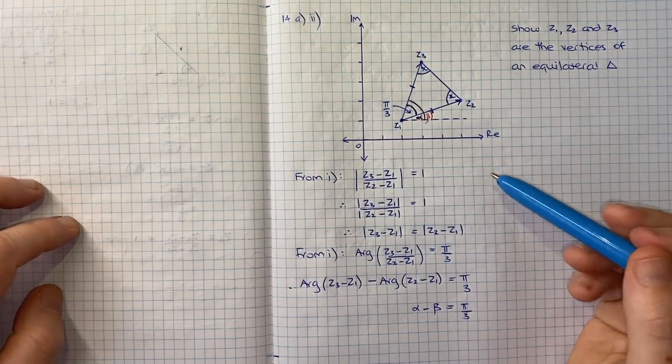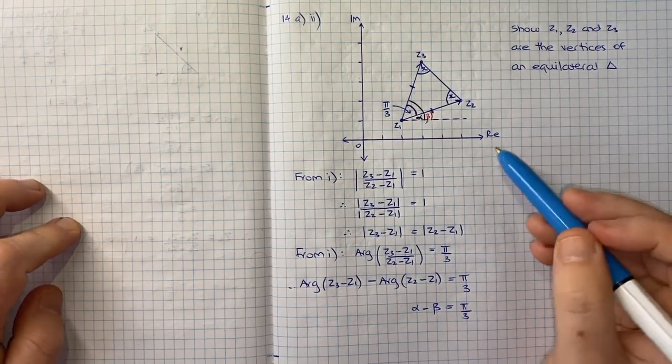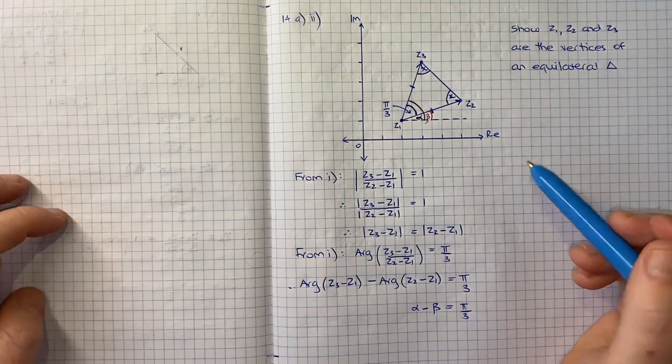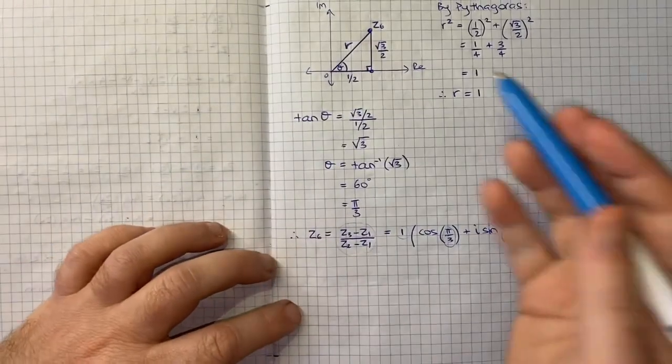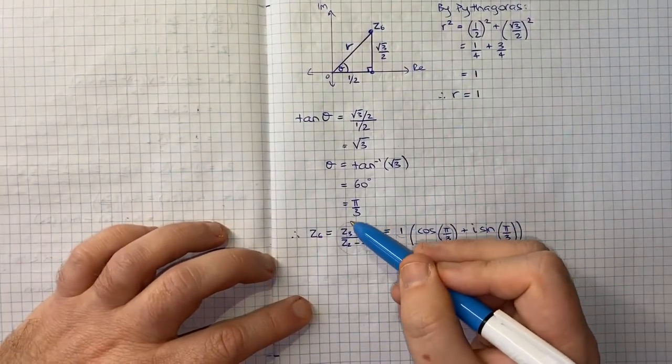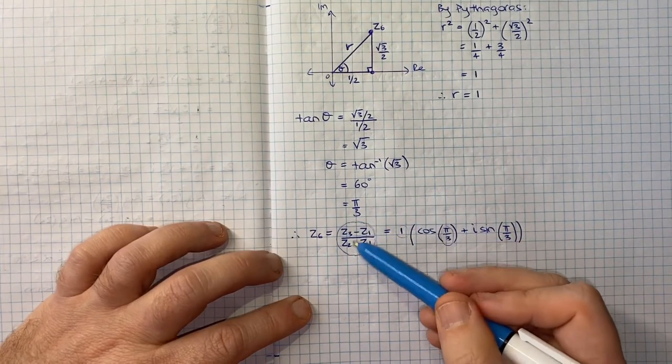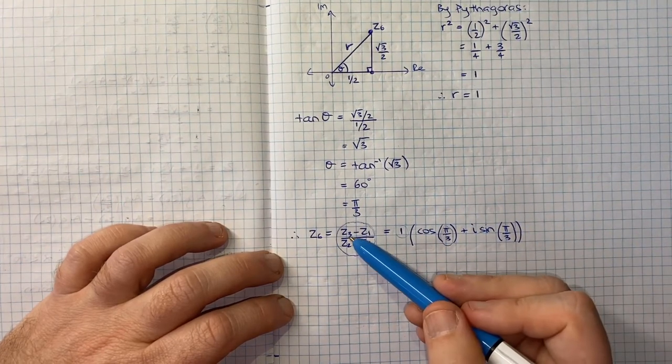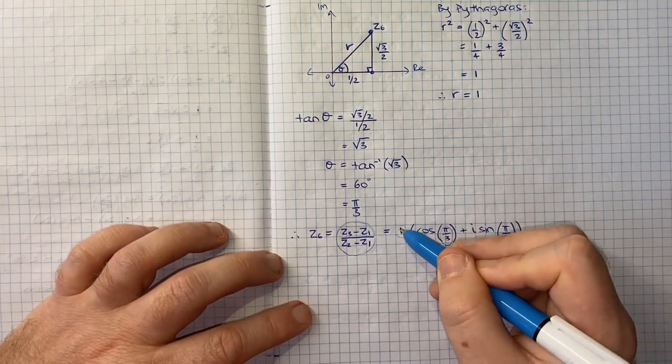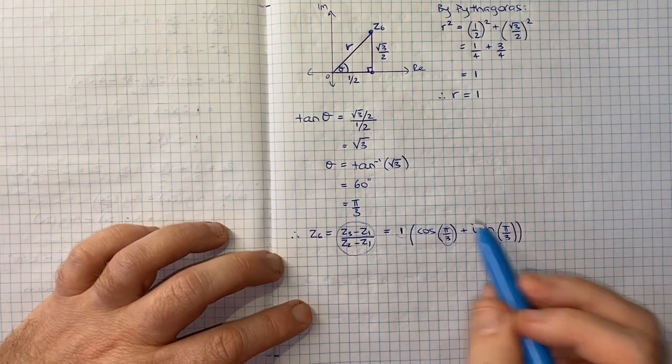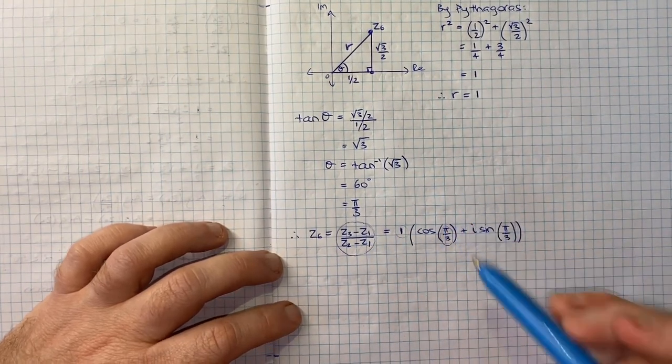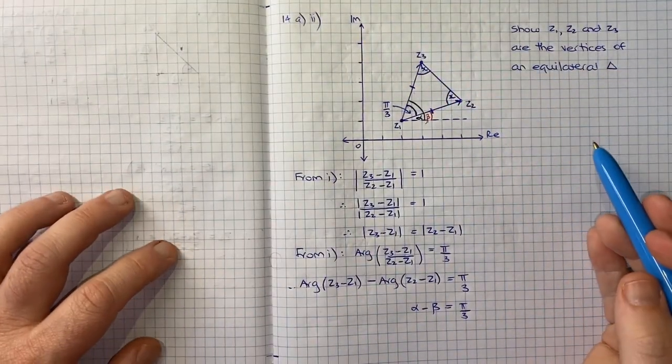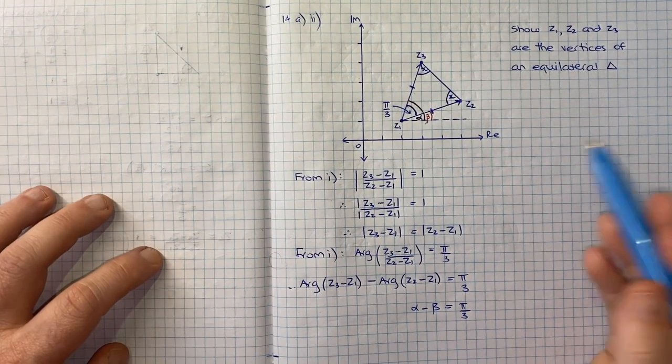I think, again, with a lot of these questions that are multi-part, whenever you see the word hence, it's a very strong signal that you want to be using what you've just shown. And I guess it's now clear to us why we wanted to work out the mod arg form of this seemingly quite random complex number. However, it's because the question writer knew that we're going to get a modulus of one and that allows us to work out that these first two sides must be equal and things flow pretty nicely from there. So hopefully that's all made sense.